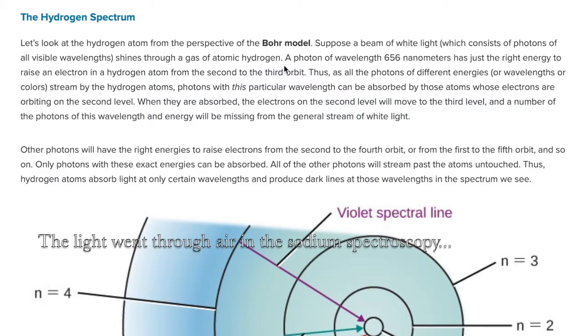I find it a little different than what's happening in the sun. A photon of wavelength that has just the right energy to raise an electron in a hydrogen atom from the second to the third orbit. No, wait, this is a hydrogen atom at room temperature or hydrogen gas. So this is hydrogen gas at room temperature. A photon can raise the energy from the second to the third orbit. Well, is that the same as what's happening in the sun? What energy level is hydrogen in the sun? Thus, all the photons of different energies or wavelengths streamed by the hydrogen atoms, photons with this particular wavelength, can be absorbed by those atoms whose electrons are orbiting on the second level. When they are absorbed, the electrons on the second level will move to the third level and number of photons of this length will be missing from the, and these wavelengths of energy will be missing from the general stream of white light. And this is what it looks like here, what they say it looks like. Who knows if any of this is real?